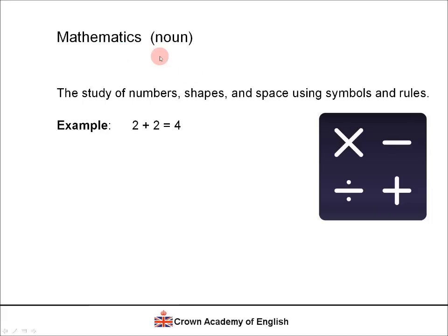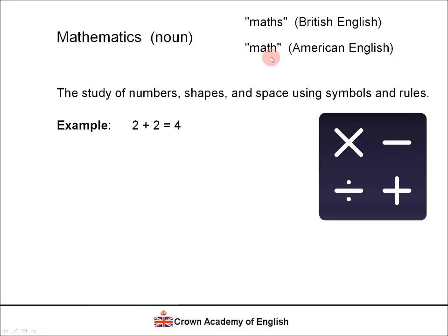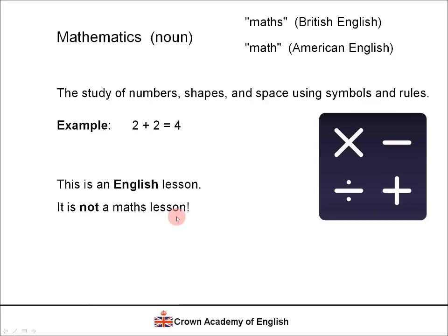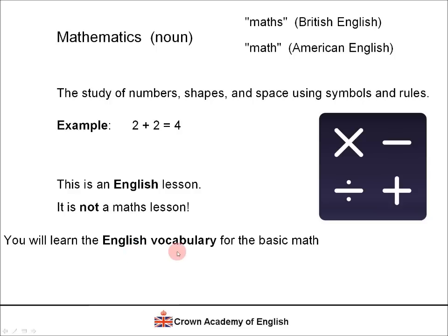We also have an abbreviated form of this word. In British English, we call it maths with an S. However, in American English, they say math in the singular without an S. This is a big difference between both languages. This is an English lesson — it is not a maths lesson, so I'm not going to explain how to do complicated maths calculations. This is a vocabulary lesson and you will learn the English vocabulary for the basic mathematical symbols and operations.